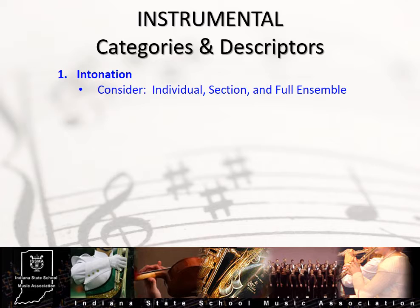Category 1 deals with intonation — the realization and accuracy of pitch within the ensemble. In this category, you are to consider three levels of intonation: individual, section, and full ensemble. You should be aware of opportunities throughout the performance to evaluate all three levels, and also how the three are interrelated. Solos, solis, and section features provide opportunities to evaluate intonation on an individual and section level, while full tutti passages lend the adjudicator an opportunity to assess how intonation at the individual and section level affects the pitch accuracy of the full ensemble. It is beneficial to know basic pitch tendencies of each instrument — i.e., the problem notes — and helpful to provide suggestions on how to compensate for these notes on an individual basis to provide greater opportunities for successful pitch on a section and ensemble level.